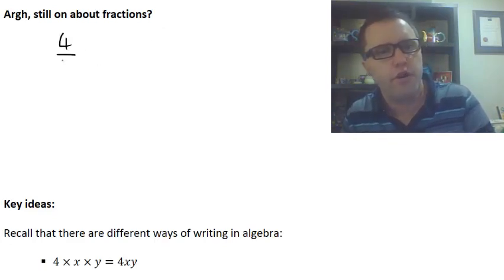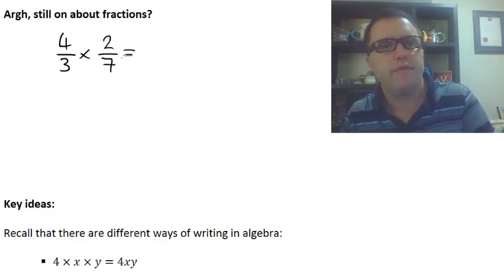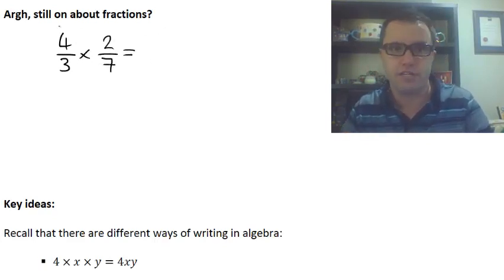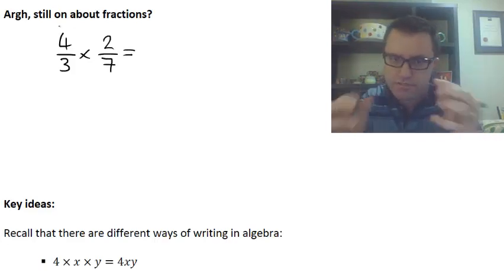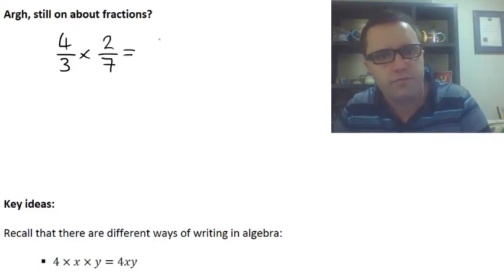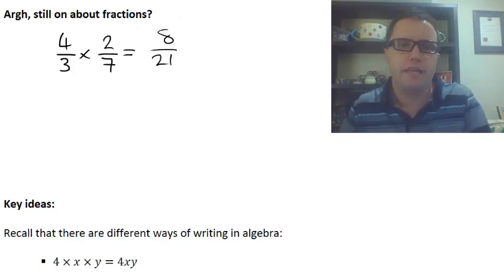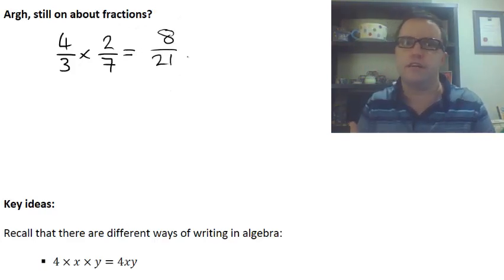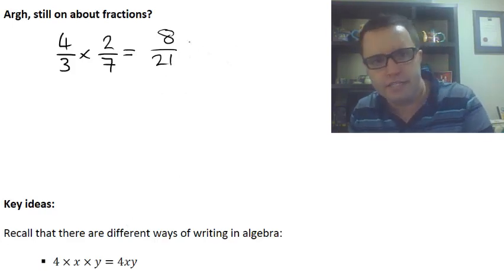So remember, if we had 4/3 times 2/7, and we wanted to multiply this together, we just smashed them together. We've got 4 times 2 is 8 over 3 times 7 is 21. Remember, we also had to simplify at the end, but this one doesn't get to simplify.